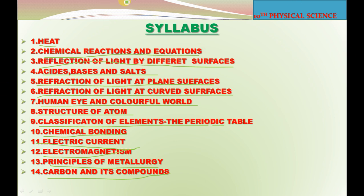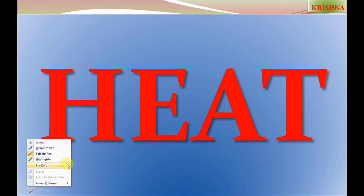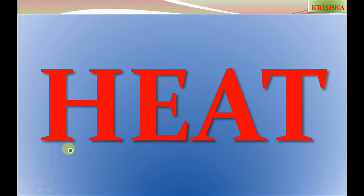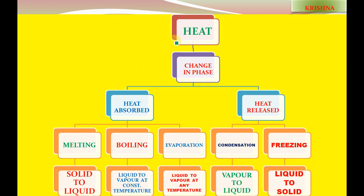The first chapter is heat. Let us explain the first chapter. Heat is a form of energy — this is a well-known definition from our lower classes, 6th, 7th, and 8th. Heat is a form of energy which flows from a hotter body to a colder body.